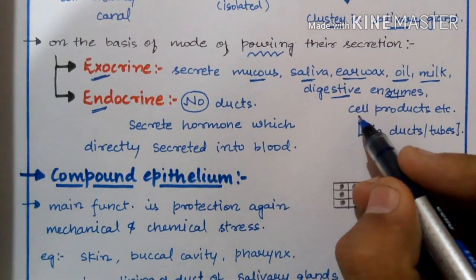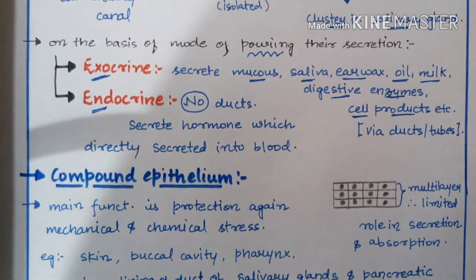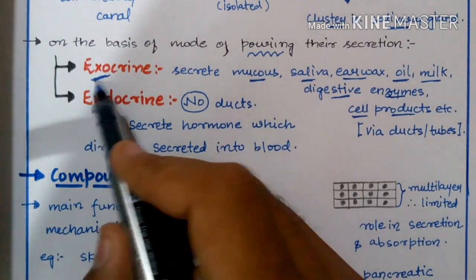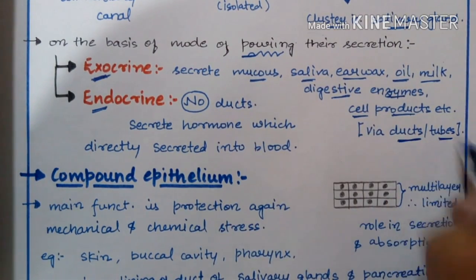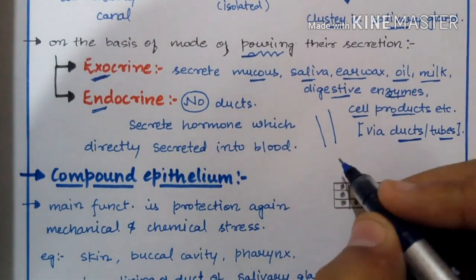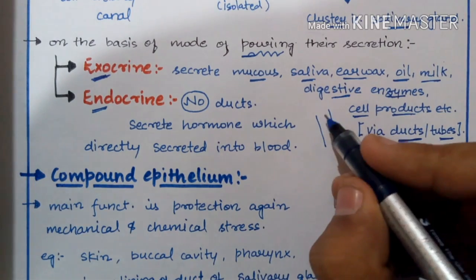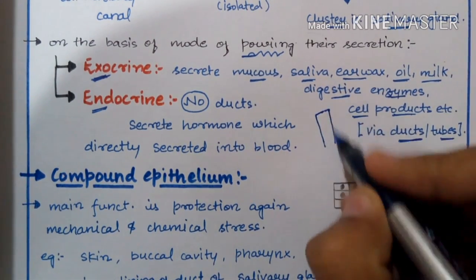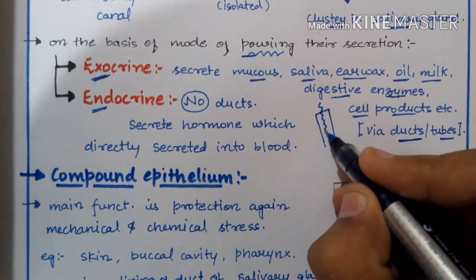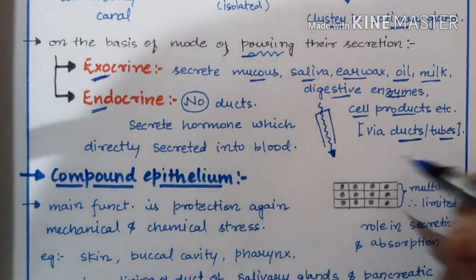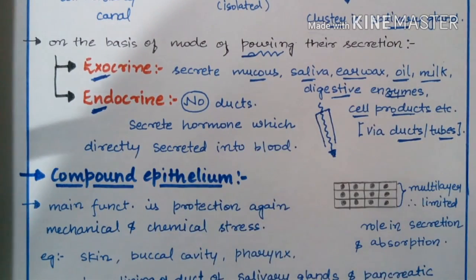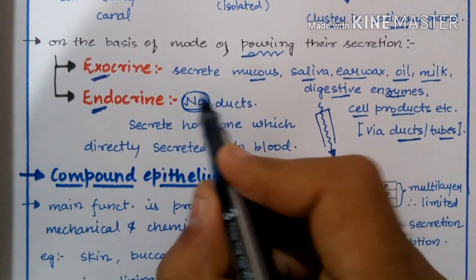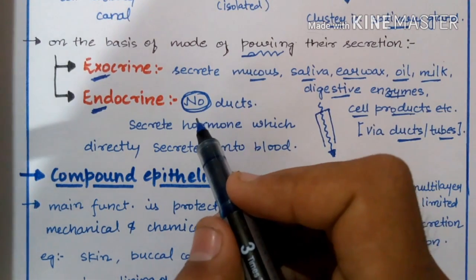Digestive enzymes are produced by glands in the digestive tract such as the pancreas. The most important thing about exocrine glands is that they pour their secretion via ducts or tubes. Through these ducts or tubes, the secretion is transported from one part of the body to another.